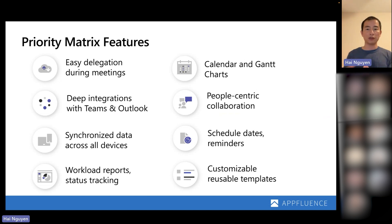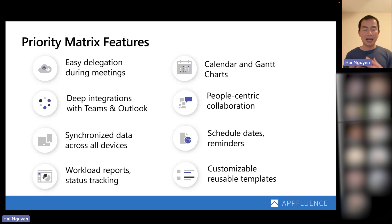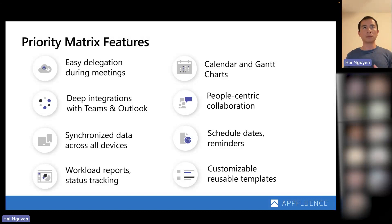We have everything from Gantt charts to calendars. We have deep integrations with Teams and Outlook. On the Outlook side, it's really about managing emails and taking emails from external data sources and tying them together with all the work you have to do today. The other component about Priority Matrix is the people-centric collaboration. Many applications focus on projects, but very few flip it and ask what are the things I have to do across all my projects — and Priority Matrix allows you to do that within the context of the people involved, understanding that context from your Microsoft Teams chat or channel. All your data is synchronized across devices, and you can use natural language to schedule dates and reminders.